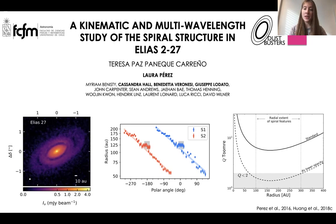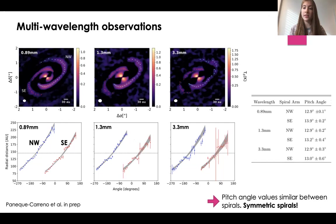This is important because the spiral structure of Elias 227 could be either due to interaction with an external body or a planetary companion, or also due to the disc itself being gravitationally unstable. So in this study, we tried to determine the origin of the spiral arms by first analyzing multi-wavelength continuum ALMA observations, analyzing 0.89, 1.3, and 3.3-millimeter observations.